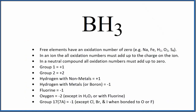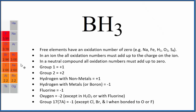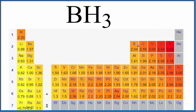In this case, let's go look at the periodic table and look at the electronegativity for boron and hydrogen. Boron is 2.04, and hydrogen is 2.20. So hydrogen is a little bit more electronegative.